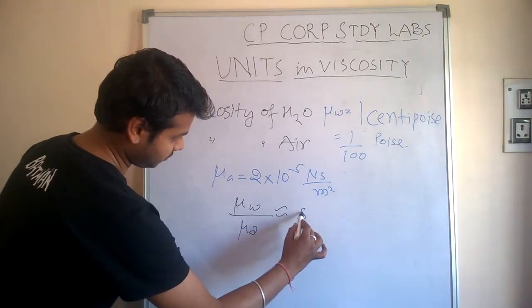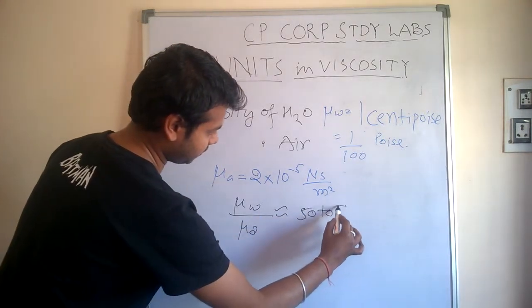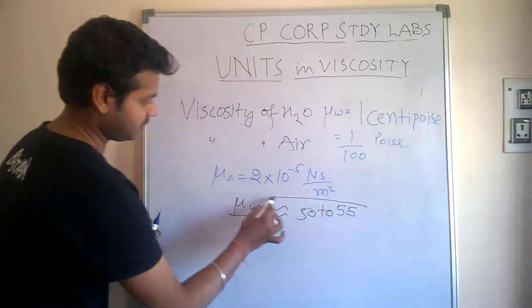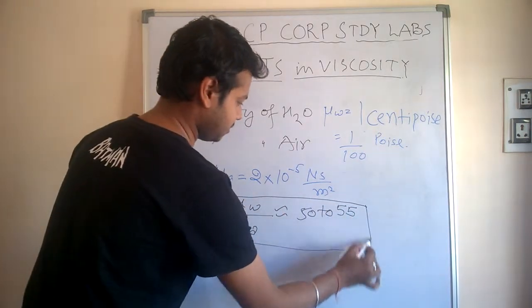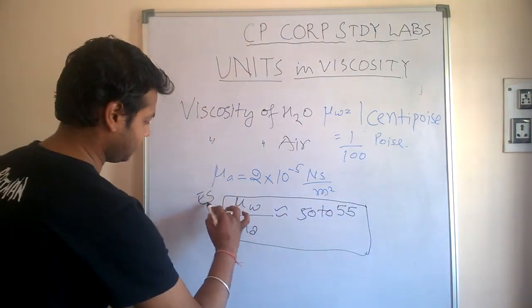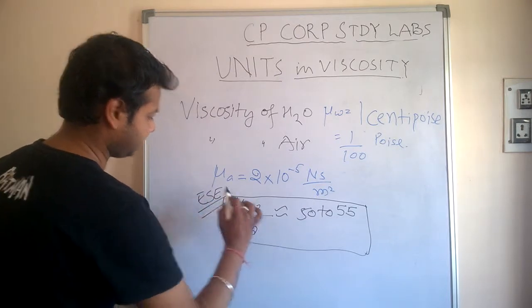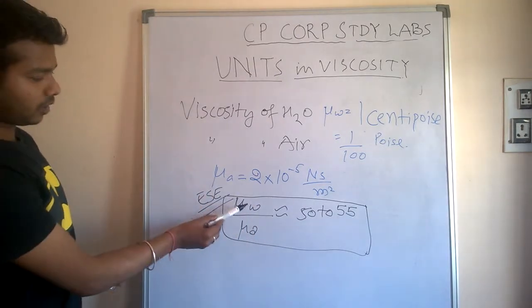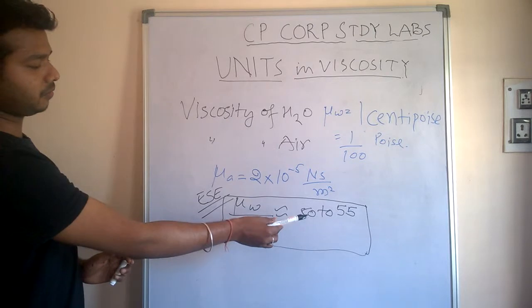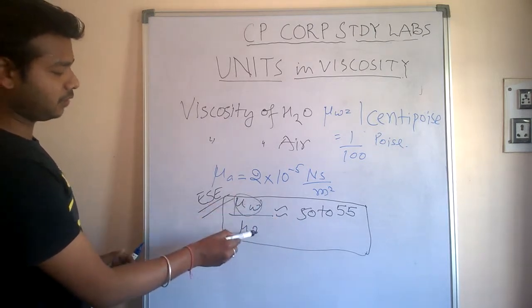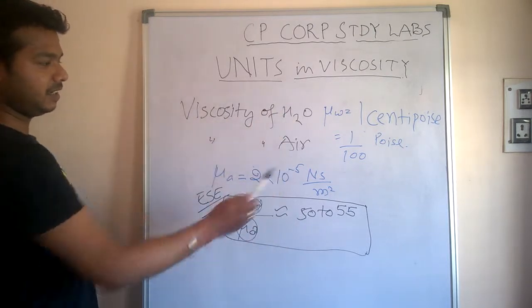This equals 50 to 55, because this was asked so many times. μ of water upon μ of air is 50 to 55. Just remember this value or the previous value - you can easily derive the other one.